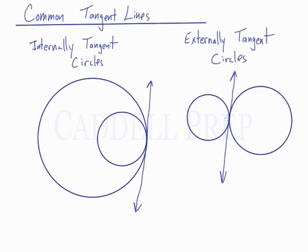But these two circles actually have other tangent lines as well. They have a tangent line here, and a tangent line here.